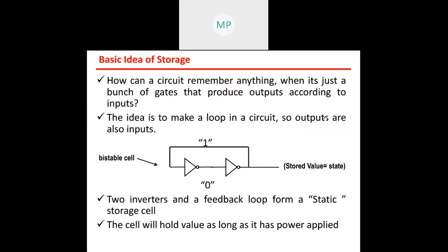How can a circuit remember anything when it is just a bunch of gates that produce output according to input? The idea is to make a loop in a circuit so outputs are also inputs. Consider a simple OR loop circuit — it is bistable, meaning this circuit has two stable states.